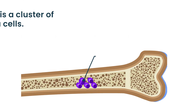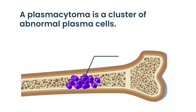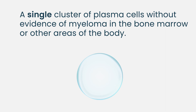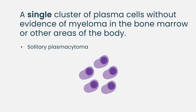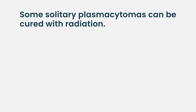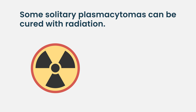Some patients will present with only one lump of plasma cells somewhere in their body. A lump of plasma cells is called a plasmacytoma. If a patient has only one plasmacytoma, with no abnormal plasma cells in the bone marrow and no other areas of the body affected by multiple myeloma, then we call that a solitary plasmacytoma. A solitary plasmacytoma is really important to identify because some percentage can be cured with local radiation alone and don't require any chemotherapy.